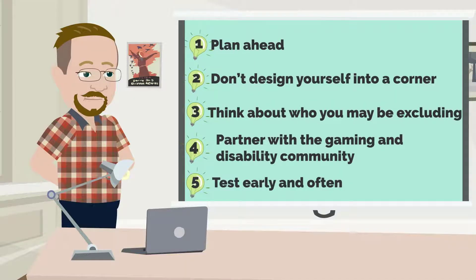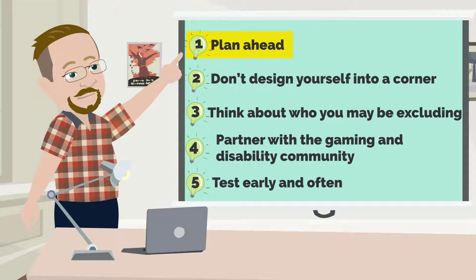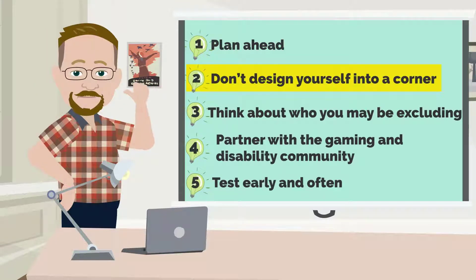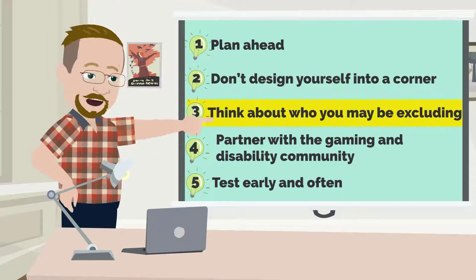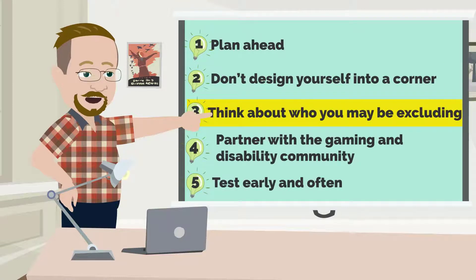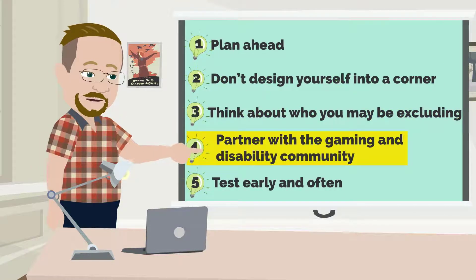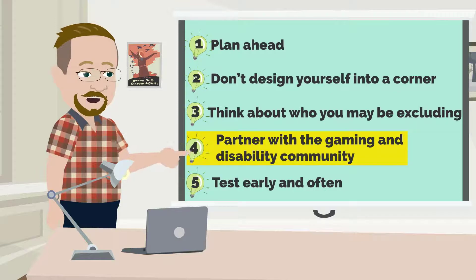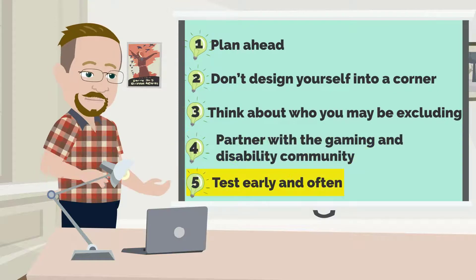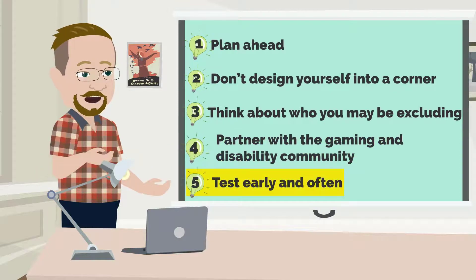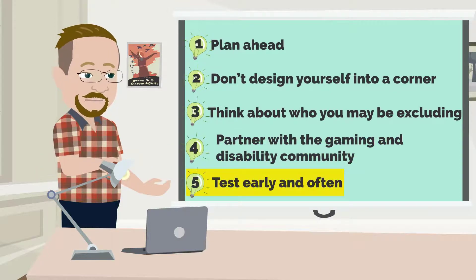Let's recap. Number one: plan ahead. Number two: don't design yourself into a corner. Number three: think about who you may be excluding. Number four: partner with a gaming and disability community. And number five: test early and test often. Let's make 2022 the best year for accessible gaming. Thanks for watching.